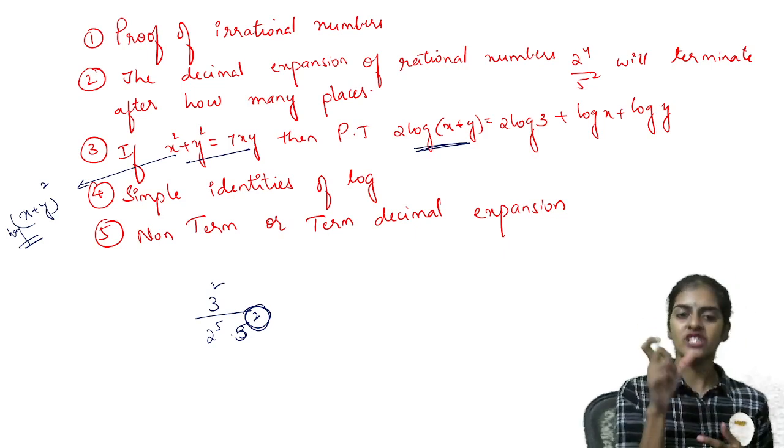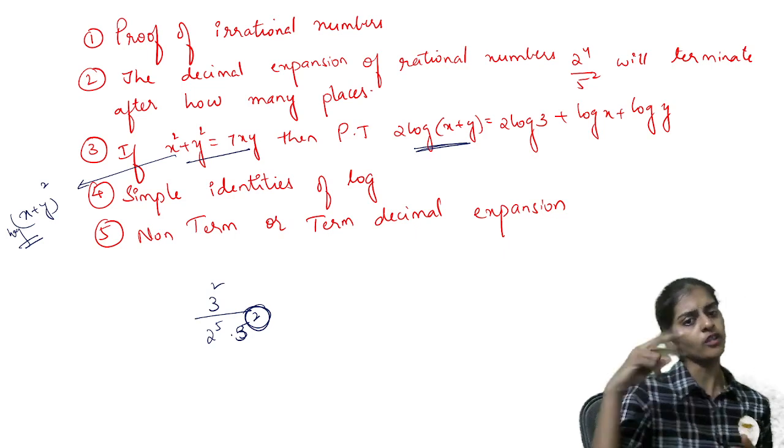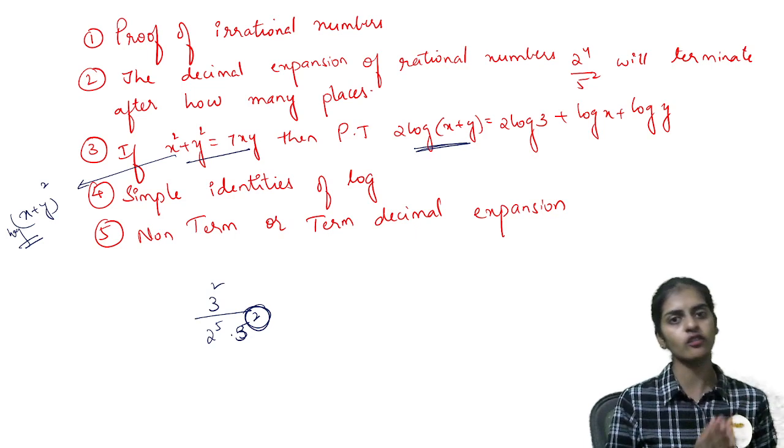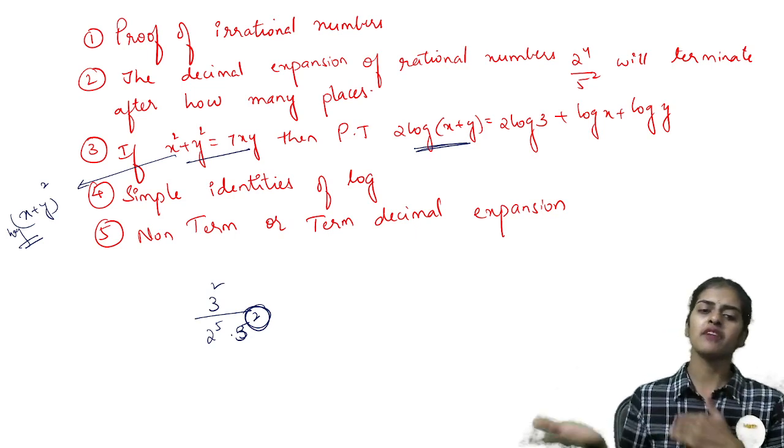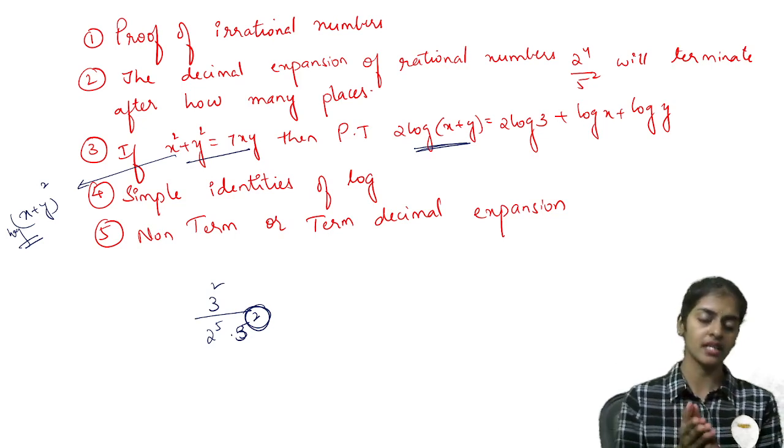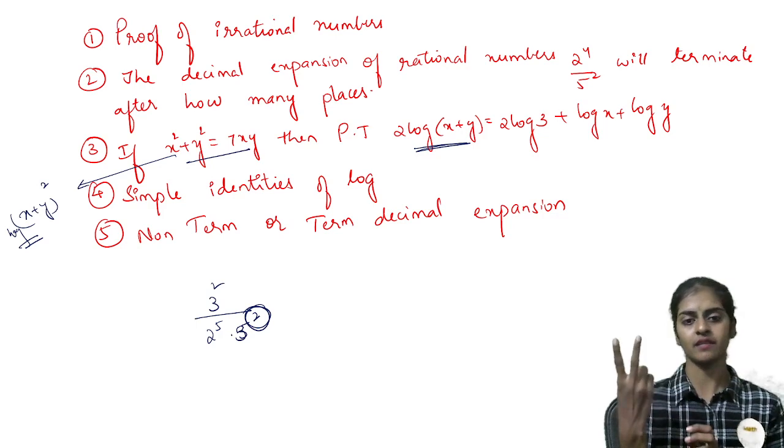After simplifying to lowest form where no more cancellations are possible, check the denominator. If the denominator has 2 or 5 or both 2 and 5, it's terminating. If any other number appears along with 2 and 5, it's non-terminating. Only 2 and 5 are allowed for terminating decimals.